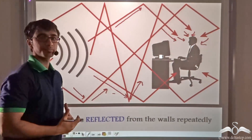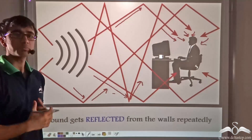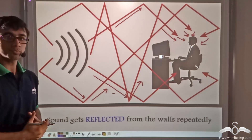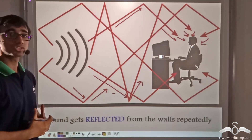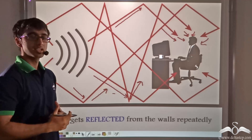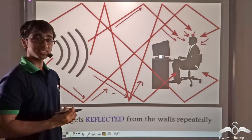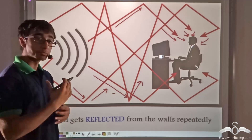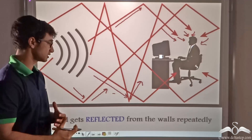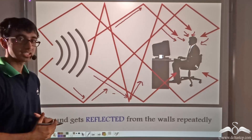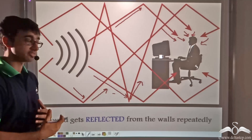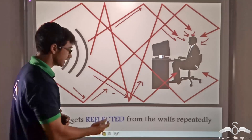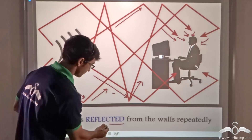So what can we say? When a person is in a room and he or she speaks, sound reaches the person's ears after multiple reflections — that is, after getting reflected repeatedly.